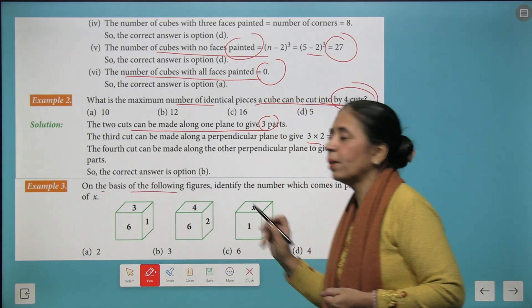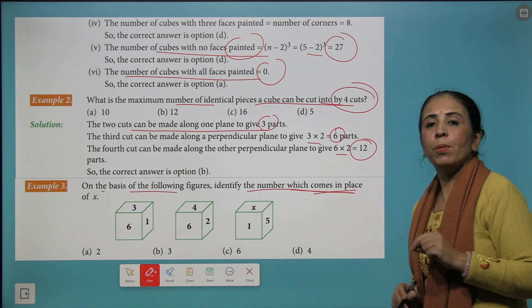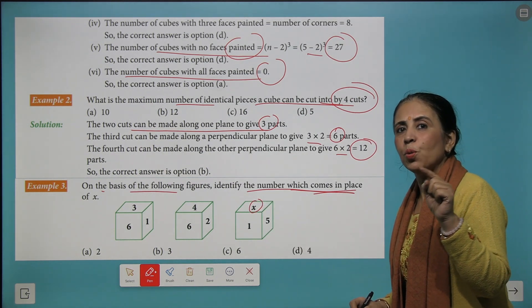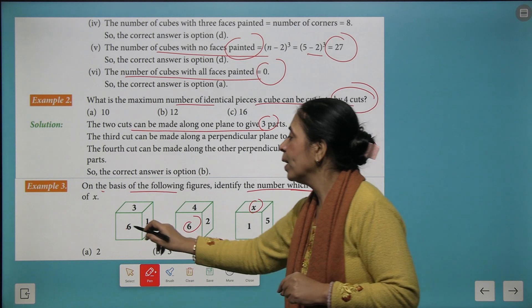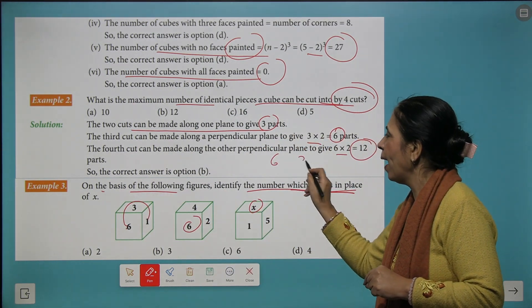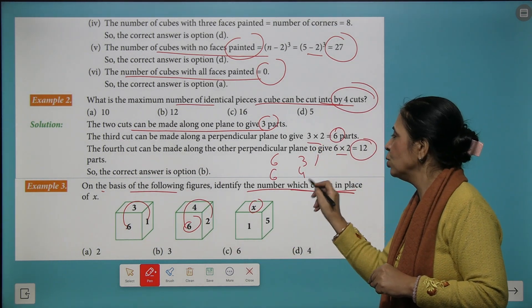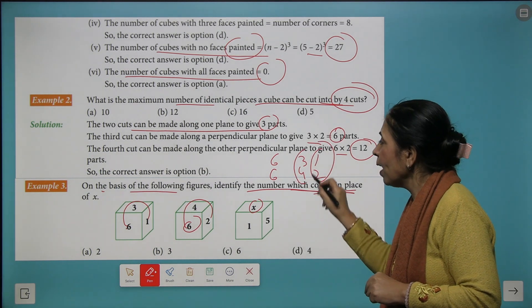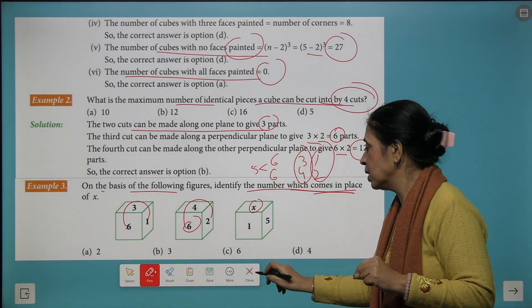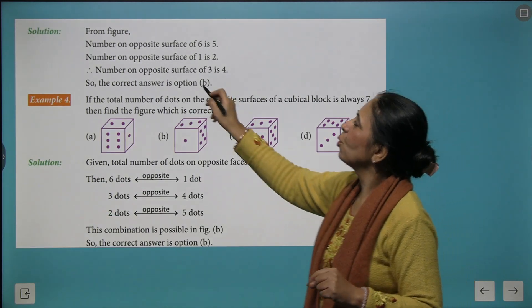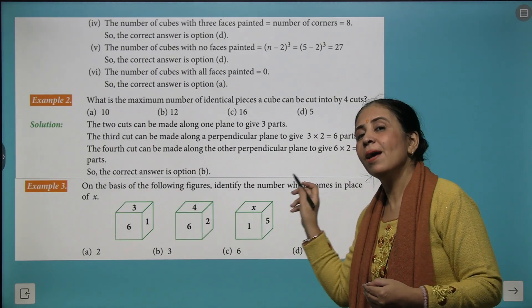Let's read the next question, on the basis of given figure, you have to identify the number which comes in the place of x. Do you remember the rule of moving in the clockwise direction? Let's see, 6 is a common face. We write down 6, 3 and 1 and starting from here, we write down 6, 4 and 2. So 1 and 2 are opposite sides, 3 and 4 are opposite sides and 6 and 5 becomes opposite sides. So we here get 3 as the opposite side of 4 and we say that 3 is the right option.